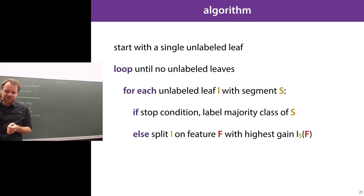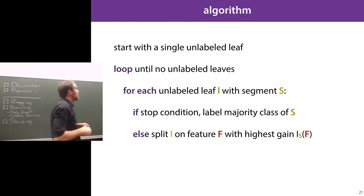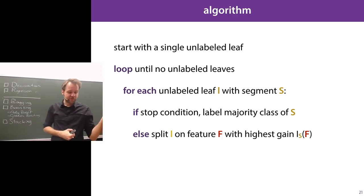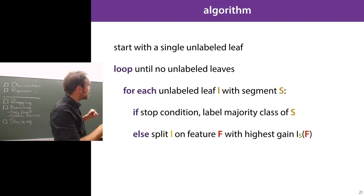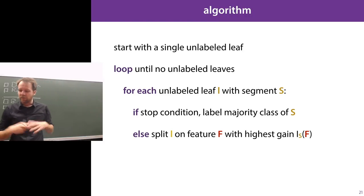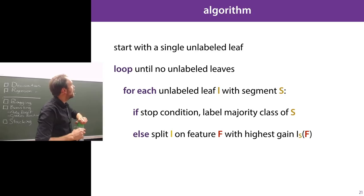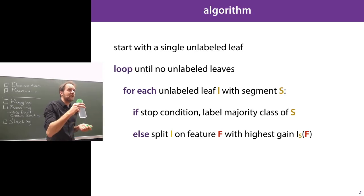Here is the algorithm more precisely: start with an unlabeled leaf and loop until all leaves are labeled. For each unlabeled leaf with segment S, if there's a stop condition — out of features or all instances have the same class — label it with the majority class of S. Otherwise, split the leaf on feature F with the highest information gain. Keep doing that until all leaves become labeled.